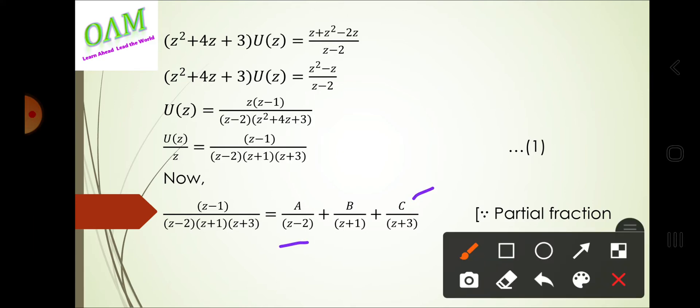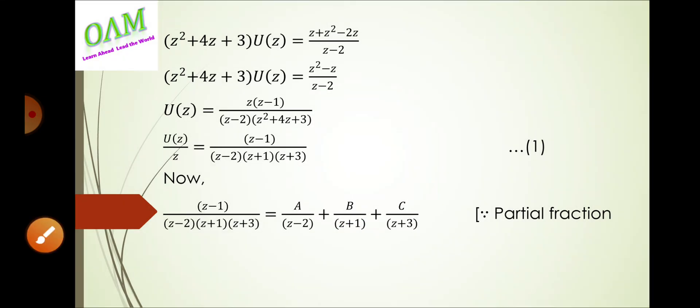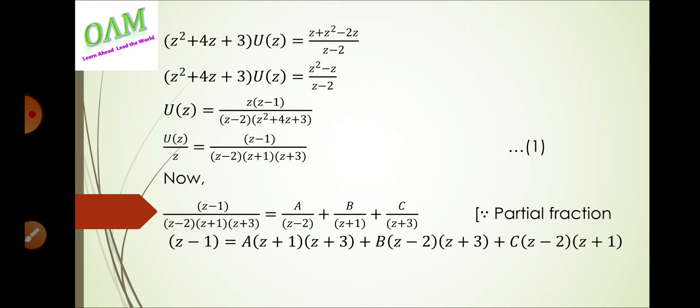Factoring the denominator: (z−2)(z+1)(z+3). Using partial fractions, we equate: (z−1) = A·(z+1)(z+3) + B·(z−2)(z+3) + C·(z−2)(z+1).